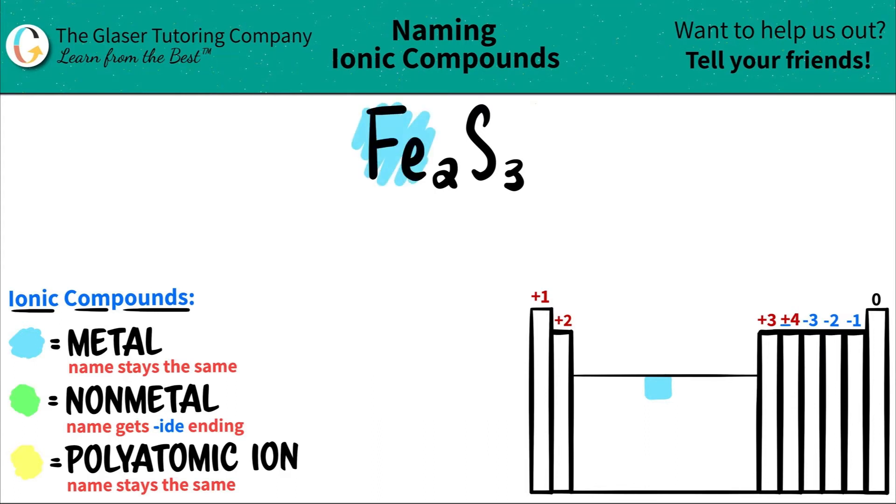S for sulfur. S is over here on the periodic table. It's a non-metal territory. So sulfur is a non-metal all the time.